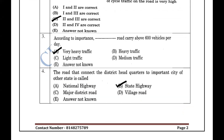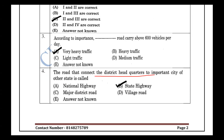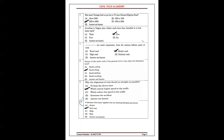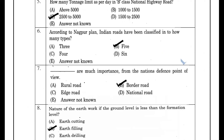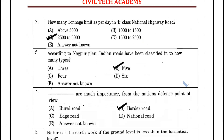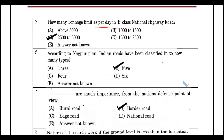The road connecting the district headquarters to important cities of other states is the State Highway. The Major District Road connects one district to another district. Village roads connect within village limits, with a population range of 2,500 to 5,000 classified under B-class national highway road criteria.